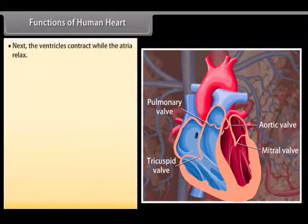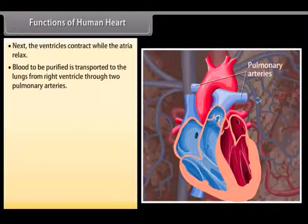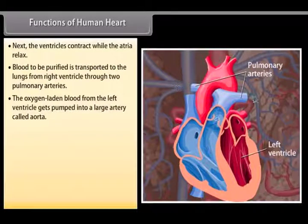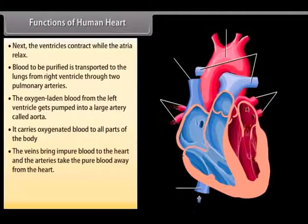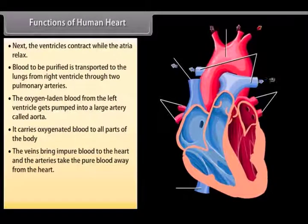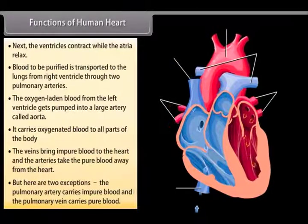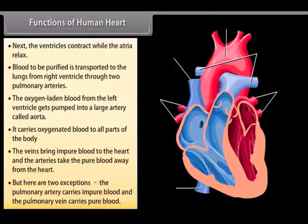Next, the ventricles contract while the atria relax. Blood to be purified is transported to the lungs from the right ventricle through the two pulmonary arteries. The oxygen-laden blood from the left ventricle gets pumped into a large artery called the aorta, which carries oxygenated blood to all parts of the body. The veins bring impure blood to the heart and the arteries take pure blood away from the heart, with two exceptions: the pulmonary artery carries impure blood and the pulmonary vein carries pure blood.